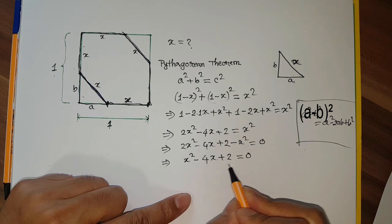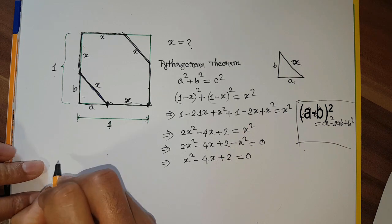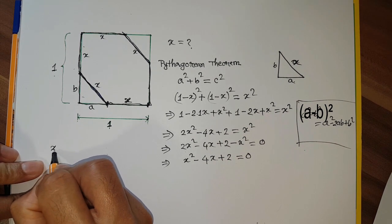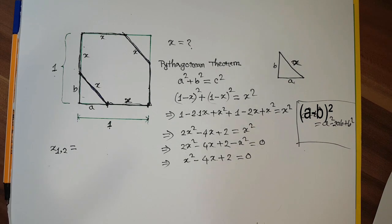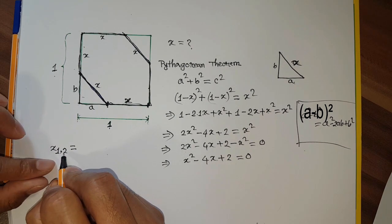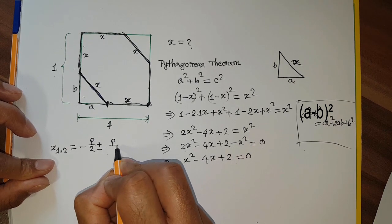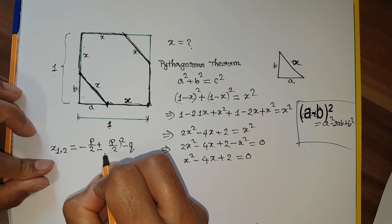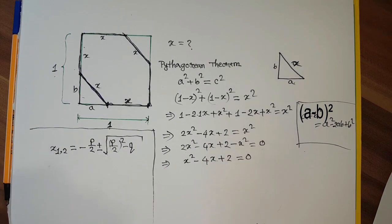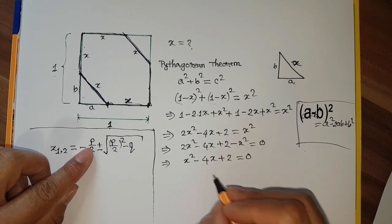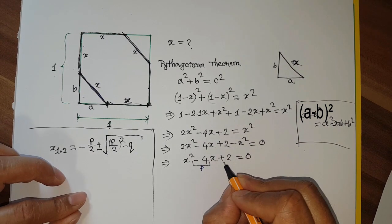This is a quadratic equation, which always has two possible solutions. Let's call them X₁ and X₂. I will use the general PQ form of the quadratic equation: X₁,₂ = -(P/2) ± √((P/2)² - Q). What is P and Q here? From our equation X² - 4X + 2 = 0, P equals minus 4 and Q equals plus 2.